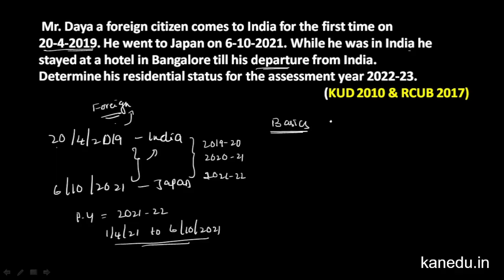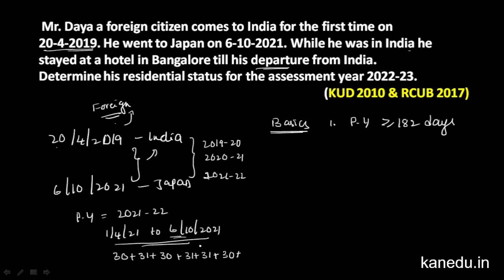First basic condition: check whether he stayed in India for more than 182 days in the previous year. For the previous year 2021-22, counting from April: April 30 days, May, June, July, August, September, October 6 days — total 189 days. So the first basic condition is fulfilled.